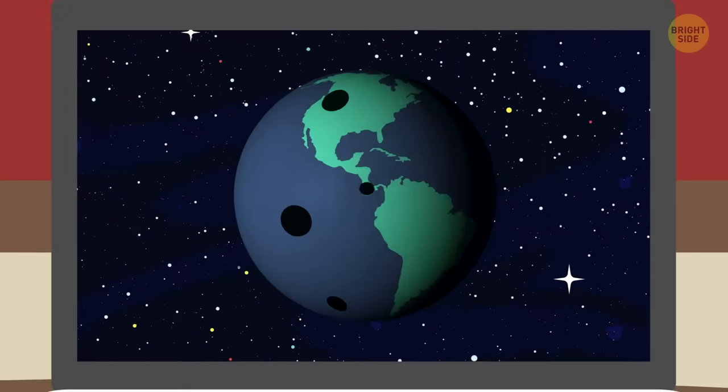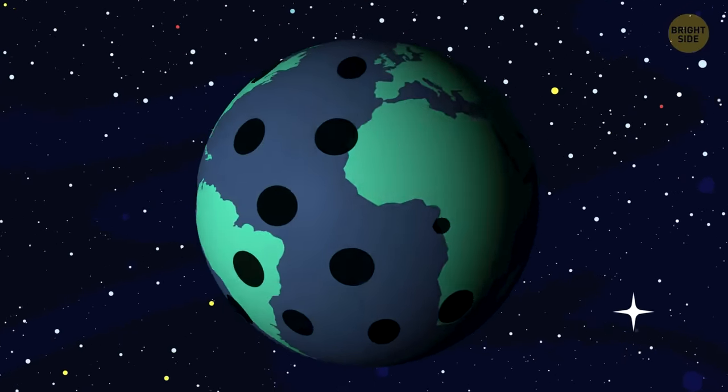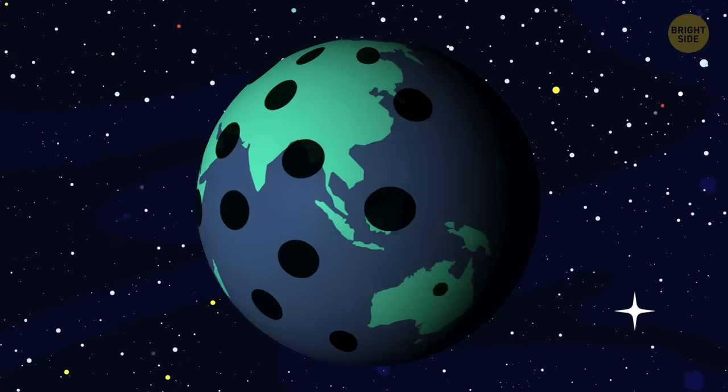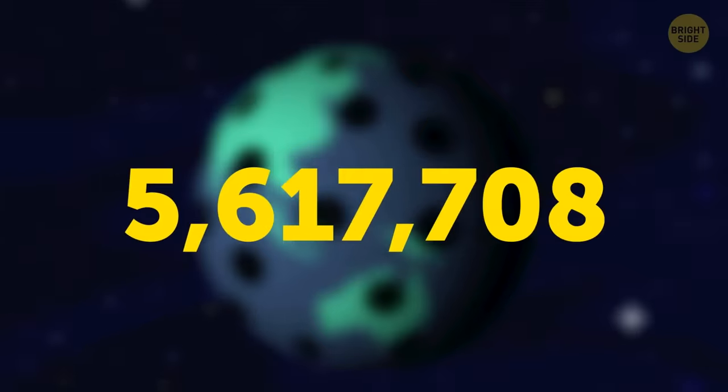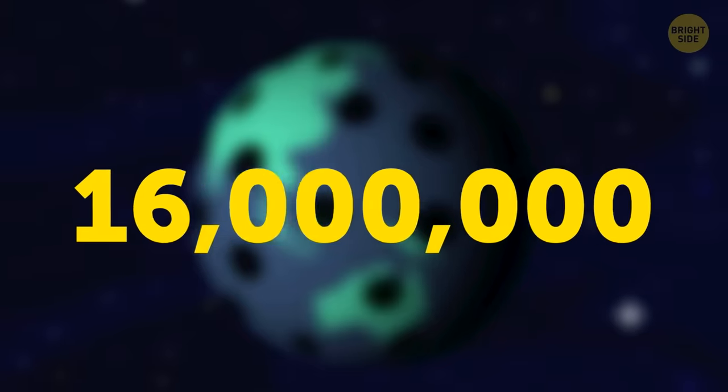Well, at any given moment, around 2,000 thunderstorms are happening in different places on Earth. And if we add up one full year, this number will be more than 16 million.